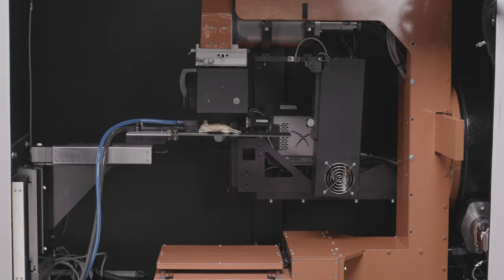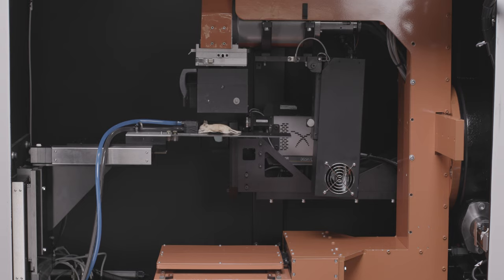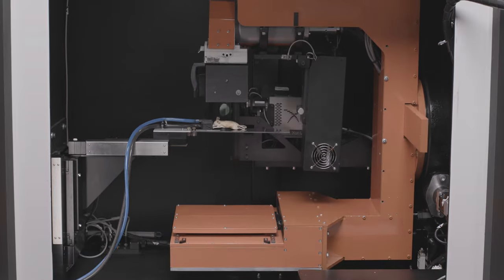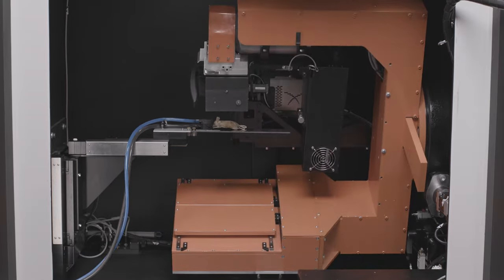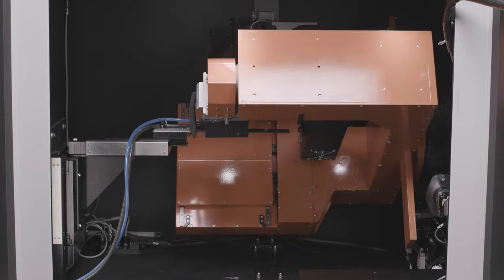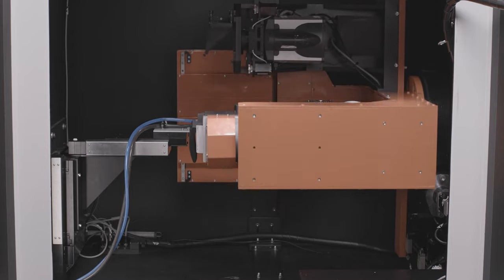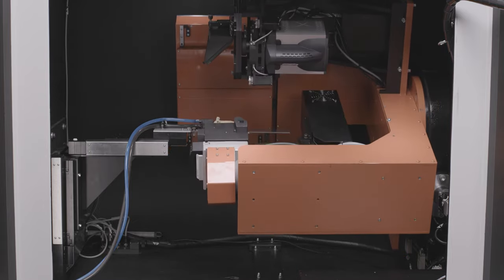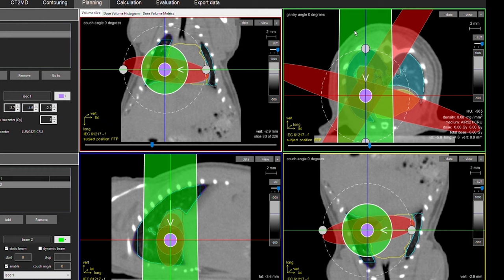The dynamic collimator used with Smart ATP creates variable field sizes specific to specimen morphology. A pre-image captured prior to treatment verifies the focal radiation to the specific target, while minimizing radiation dose to healthy tissue.